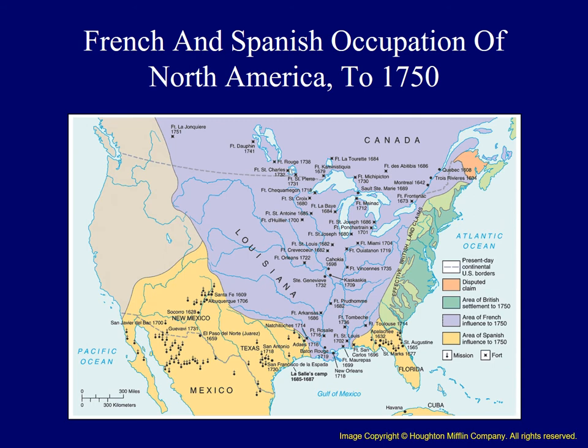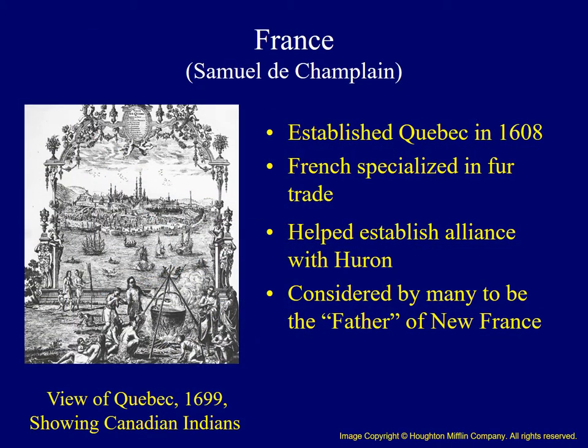Eventually, French claims in North America included a vast territory. The French successfully maintained their access to beaver in part due to their alliance with the Huron, initially established by Champlain. This began in 1609 when he accompanied several Huron in an encounter with the Iroquois — the Huron, with French help, defeated their bitter enemies and ensured the French traders' access to the interior of what is now Canada. Champlain was important because of the trading network he helped establish, and many referred to him as the father of New France.